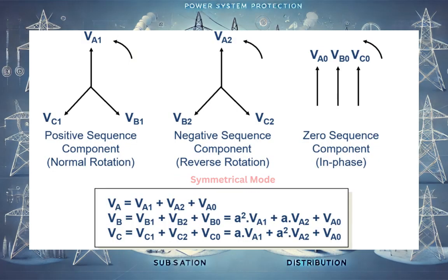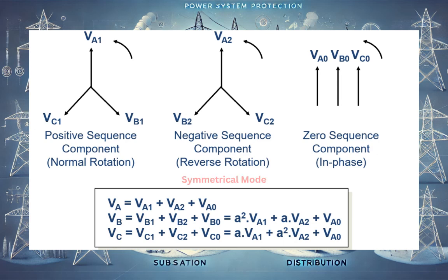We'll see the symmetrical mode first. Before using the symmetrical mode in the RTMS software, let's understand what the symmetrical mode feature is and why we need it. In power systems, positive sequence, negative sequence, and zero sequence are important factors defining how power, voltage, and current are defined. Positive sequence is normal rotation — A phase, B phase, C phase clockwise. In negative sequence, B and C phase are reversed. In zero sequence, all phases are in-phase.